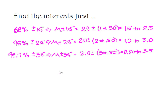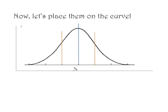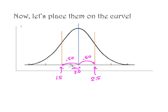Now that we have our intervals, let's look at the curves. Here's my normal curve and I know the mean is located right here in the dead center. Moving one standard deviation to the right and one to the left — each standard deviation moves me 0.5 ounces — so this point on the curve is 2.5 ounces and this point is 1.5 ounces. So 68% of the time hummingbirds are going to consume between 1.5 and 2.5 ounces of nectar in a day.